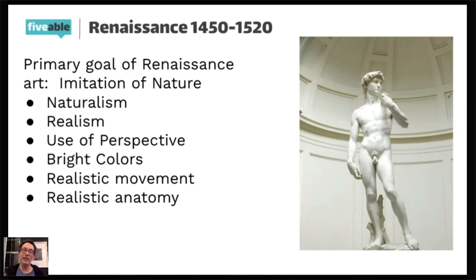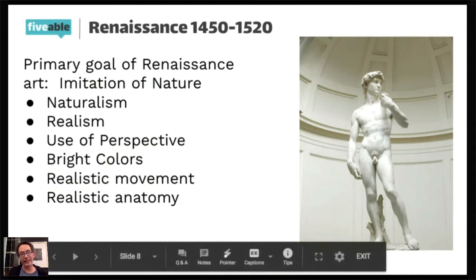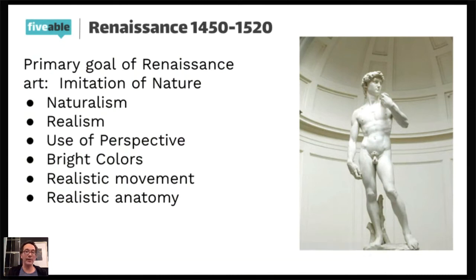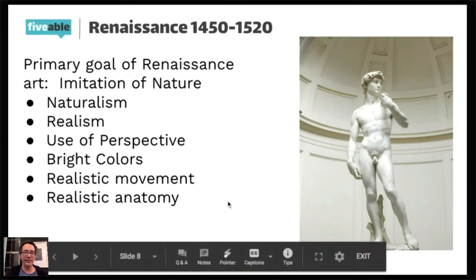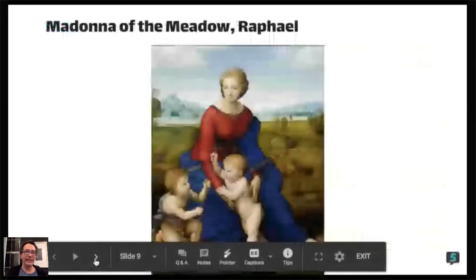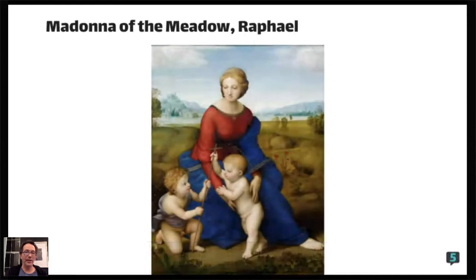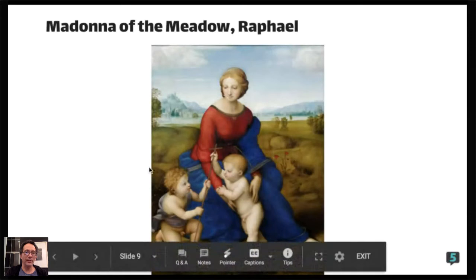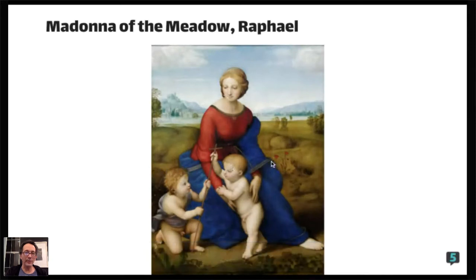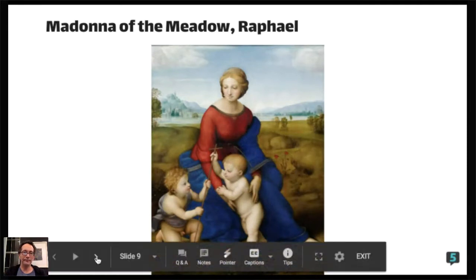Interestingly, because many of these statues were buried underground for a long time, when they came out a lot of them were just white. So most artists assumed the ancients made everything white — but in reality a lot of this art was painted, and the paint just came off. So what they understood as 'classical' — statues or images being completely white — was often a misconception.